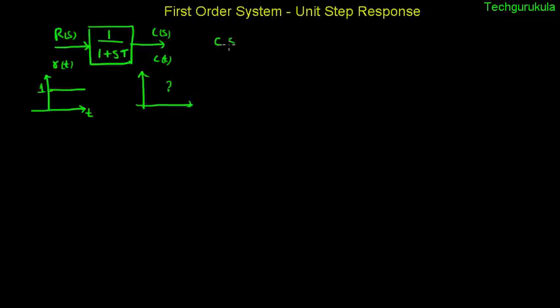Now given this input to this system, our intention is to find what is c of t. So in order to find that, first let's find what is c of s, which will be easy to find. The function is r of s times the transfer function. Now r of s for a unit step is 1 over s times the transfer function which is 1 over 1 plus st.